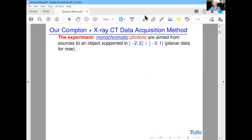The experiment is monochromatic photons, that's important, are aimed from sources to an object, which for convenience we're going to put in a box, namely negative two, two by three, negative three, one. And our analysis for now is planar data. We're working on new results on the natural 3D generalization of this, and we're getting some interesting results, but now I'll report on the 2D.